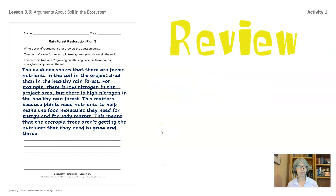Alright, let's review. Here we have a sample. The evidence shows that there are fewer nutrients in the soil in the project area than in the healthy rainforest. For example, there is low nitrogen in the project area, but there is high nitrogen in the healthy rainforest. This matters because plants need nutrients to help make the food molecules they need for energy and for body matter. This means that the Socopia trees aren't getting the nutrients that they need to grow and thrive.